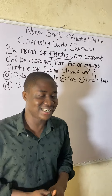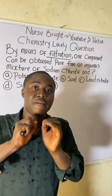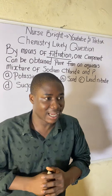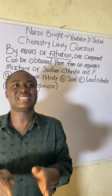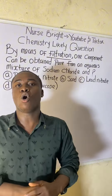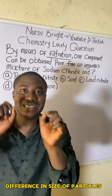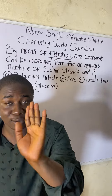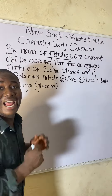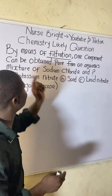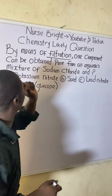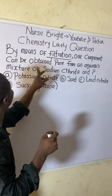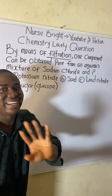Filtration as a separation technique works based on the difference in sizes of the substances being separated. The question asks: by means of filtration, one component can be obtained pure from an aqueous mixture of sodium chloride.